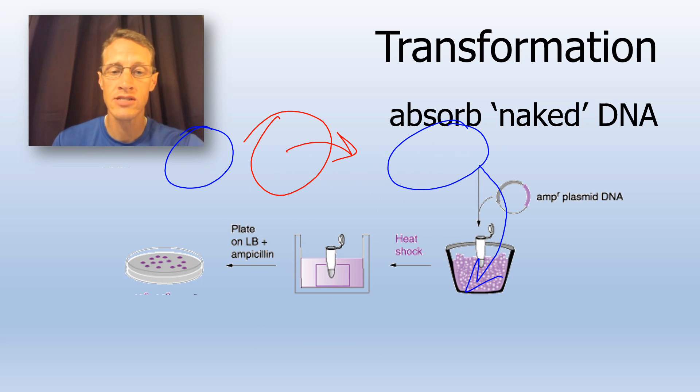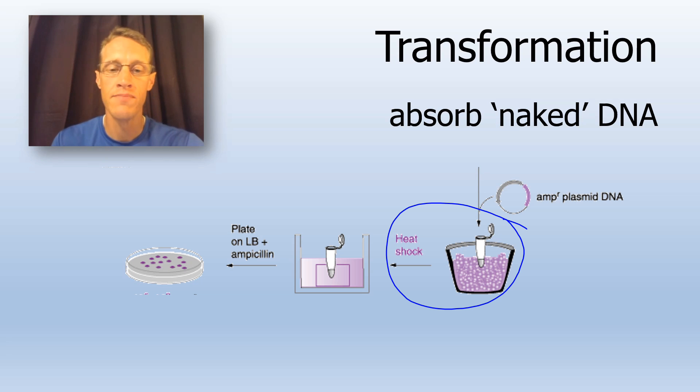Transformation is also something that is very commonly carried out in bacterial labs, where we get bacteria to take up plasmids or other pieces of DNA. And one way to do that is to heat shock them. Heat sort of loosens up the membranes and allows the cells to absorb DNA more easily.